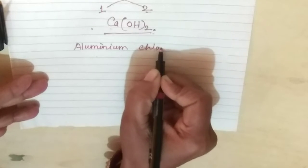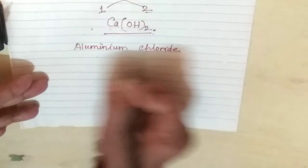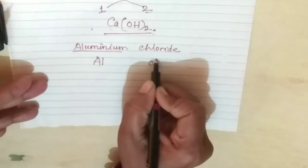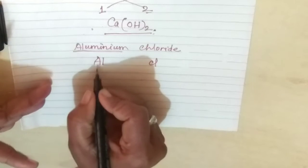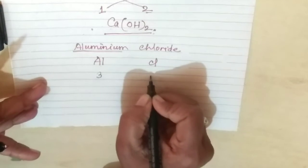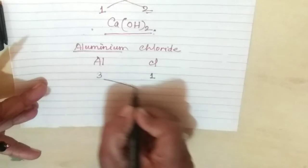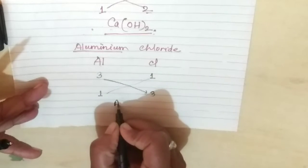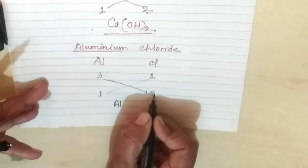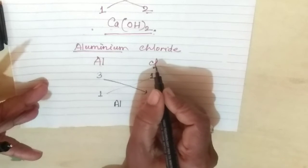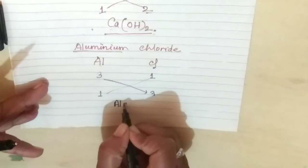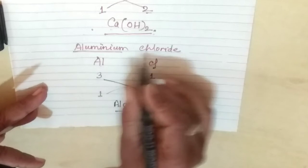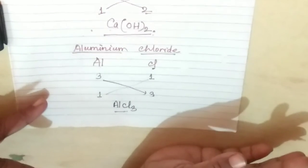The next example is Aluminium Chloride. The symbol of Aluminium is Al and Chlorine is Cl. The valency of Aluminium is 3 and Chlorine is 1. Criss cross: 3 comes to Cl and 1 comes to Al. Cl is a simple radical, so no bracket is needed. The result is AlCl₃. This is the molecular formula of Aluminium Chloride.